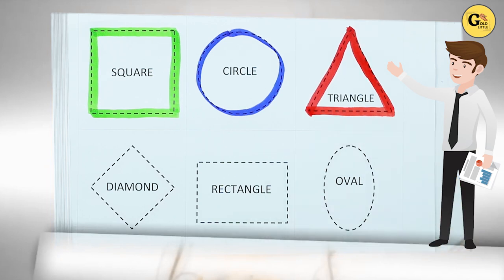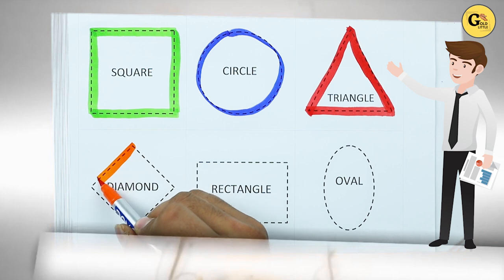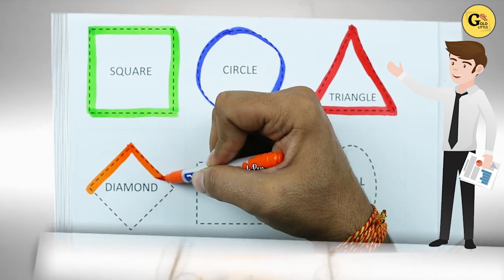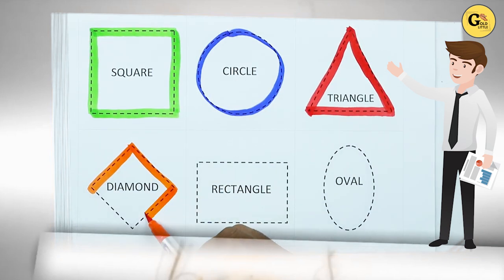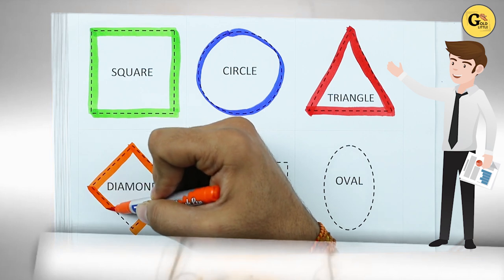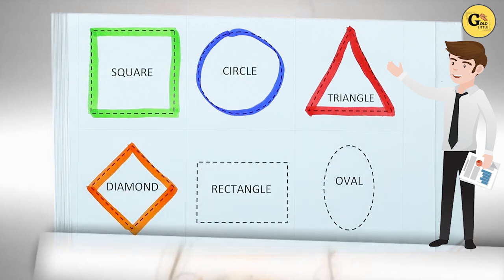It's a triangle with red color. One sliding line, two sliding line, three sliding line, four sliding line. It's a diamond. Orange color diamond.